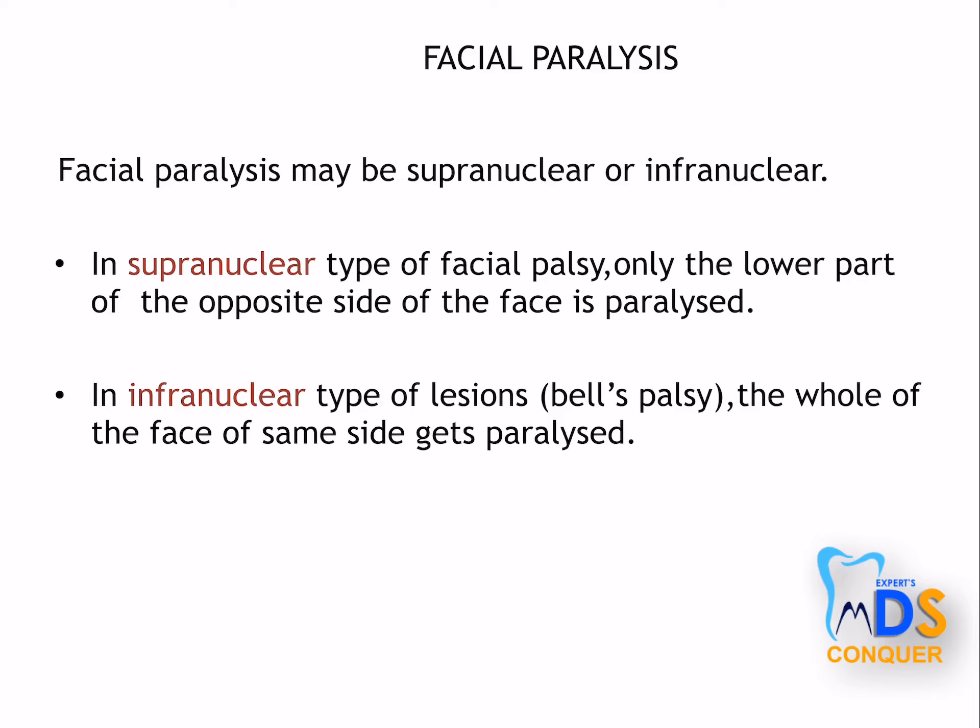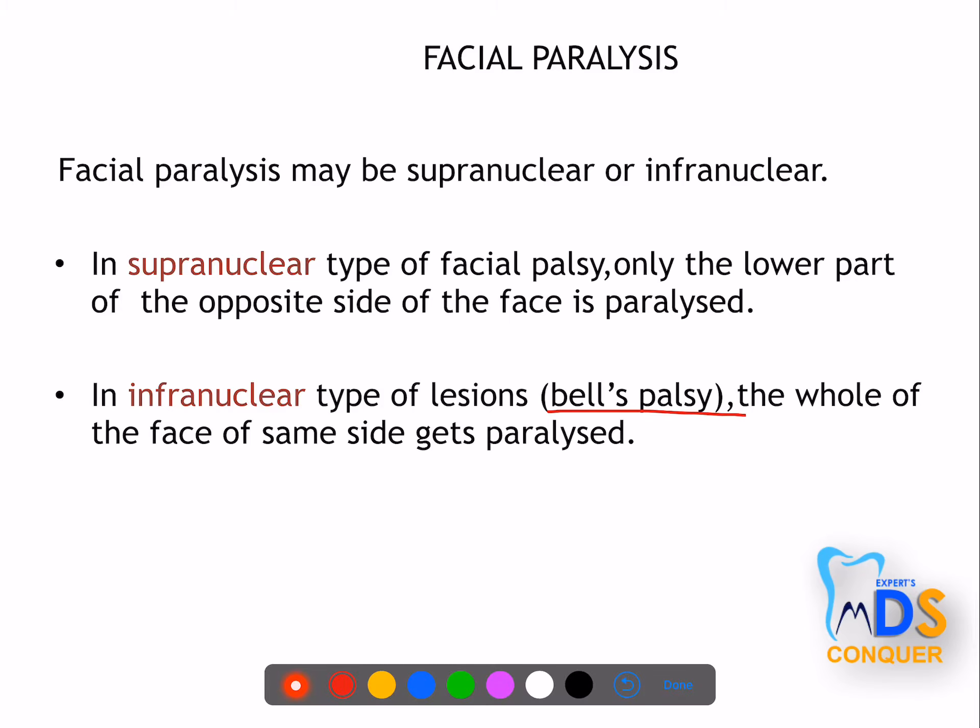In the supranuclear form, only the lower part of the opposite side of the face is paralyzed. Whereas in the infranuclear type — that is, Bell's palsy — the whole of the same side of the face gets paralyzed.